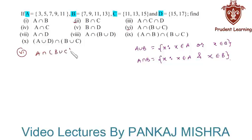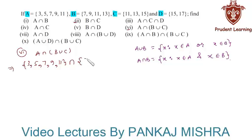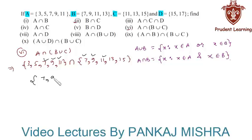In the next section we have A intersection (B union C). Set A is {3, 5, 7, 9, 11}. B union C is the set containing all elements that are either in set B or in set C, giving us {7, 9, 11, 13, 15}. The elements common to both sets are 7, 9, and 11, so A intersection (B union C) = {7, 9, 11}.